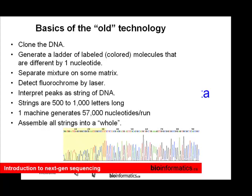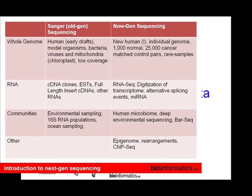That said, the old technology was how the human genome — the first and later drafts — was done. It was all through capillary electrophoresis and Sanger sequencing.